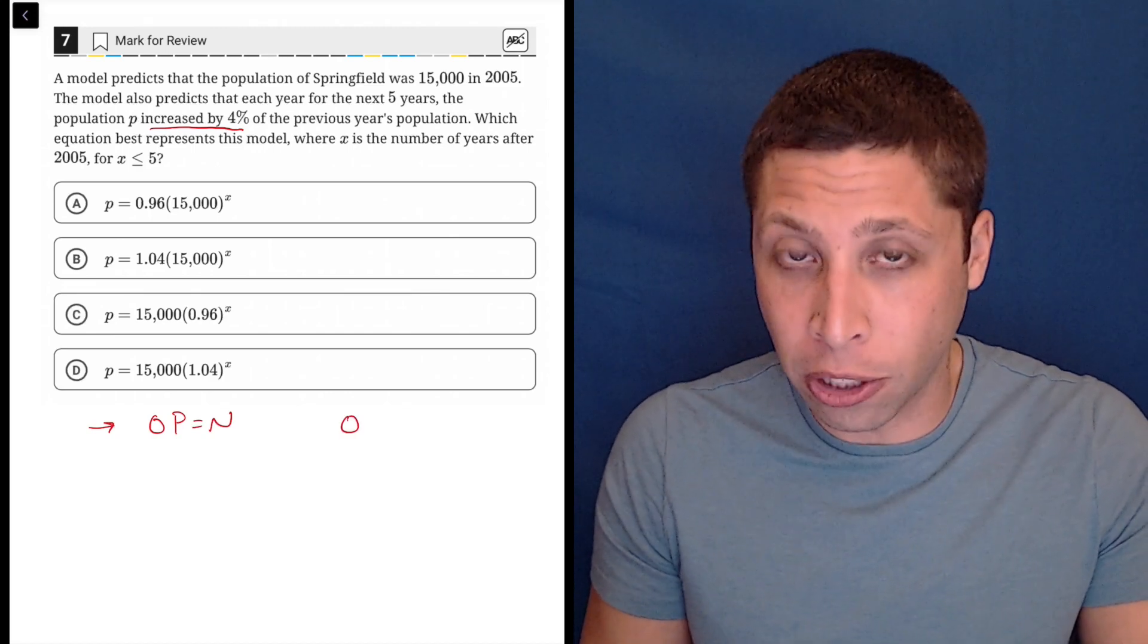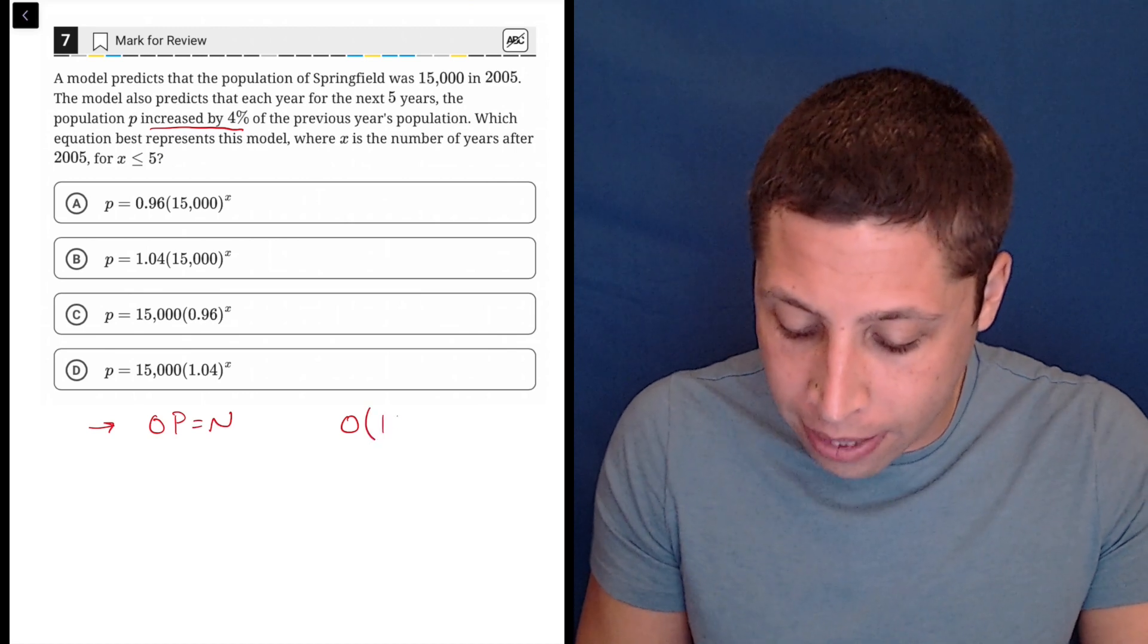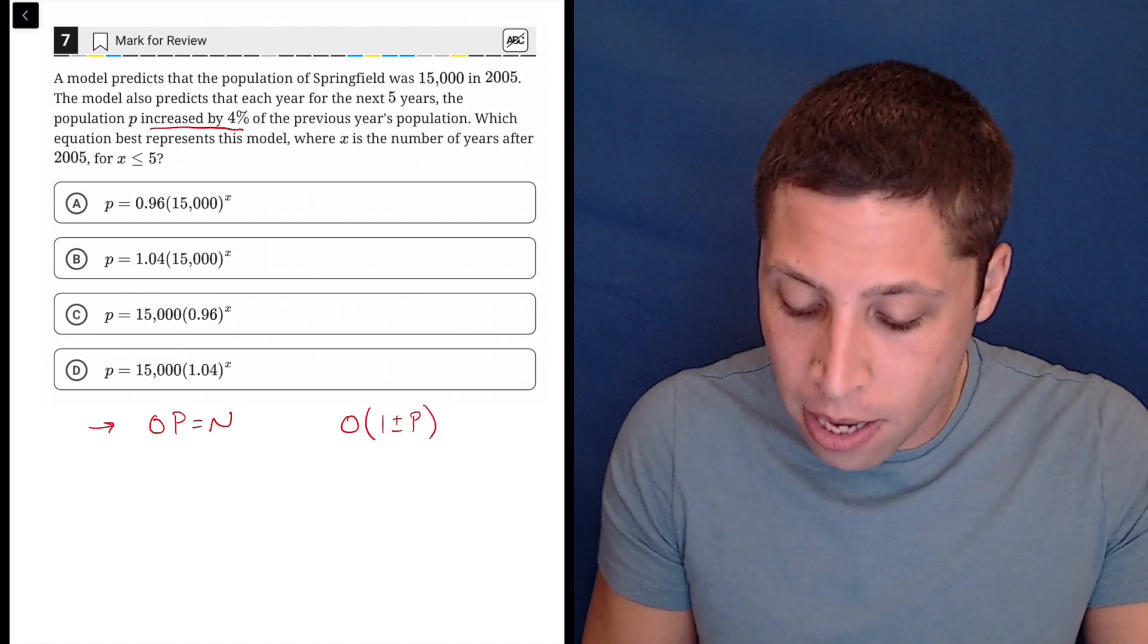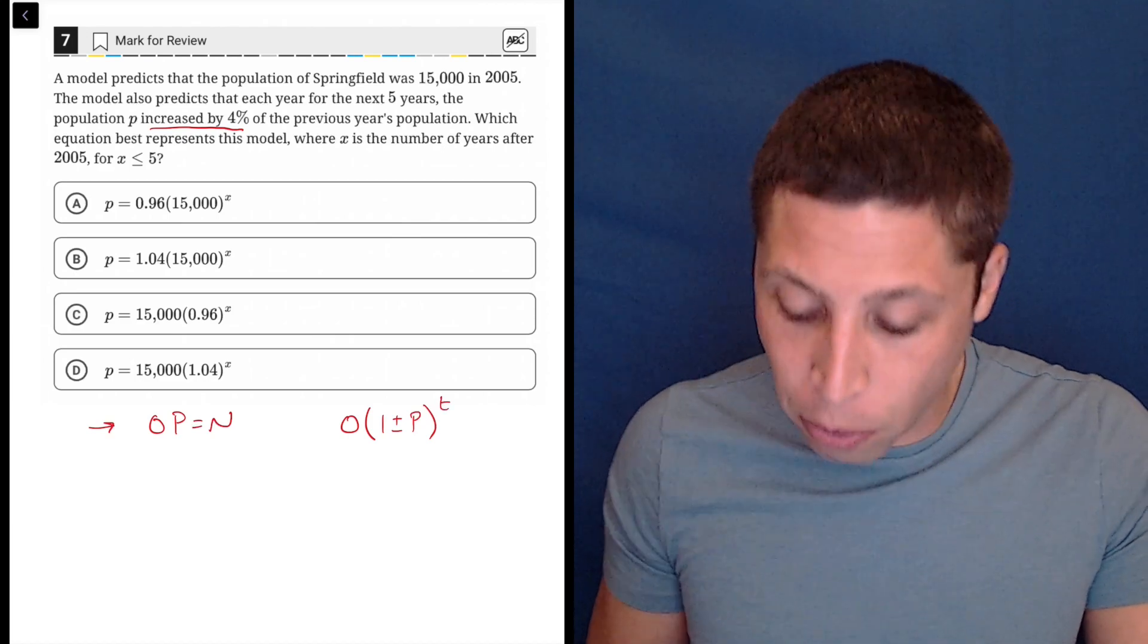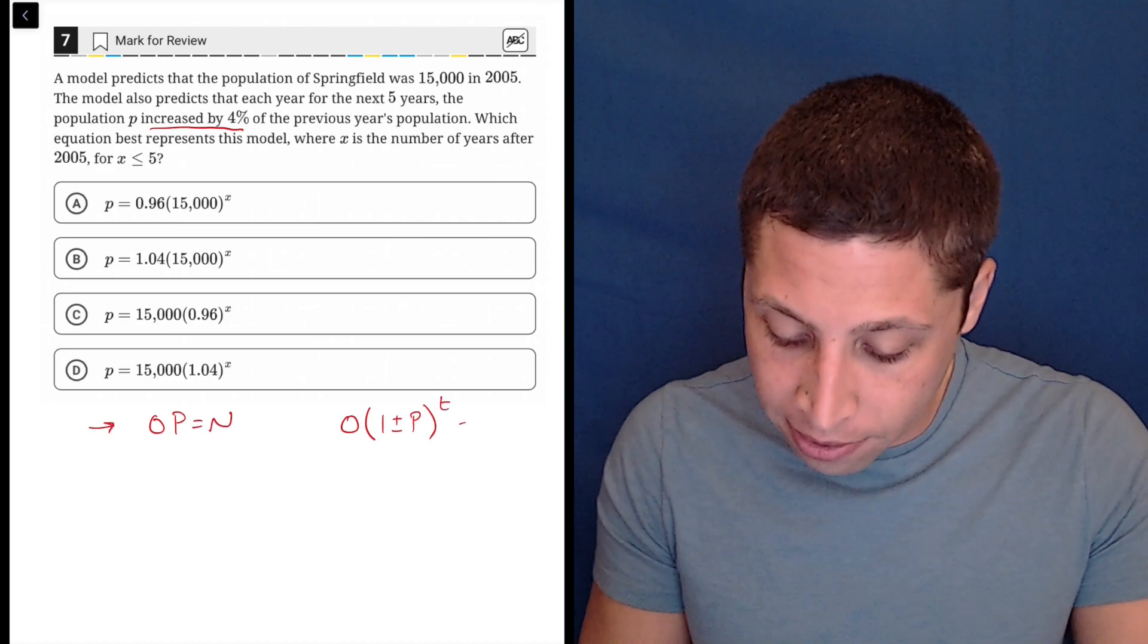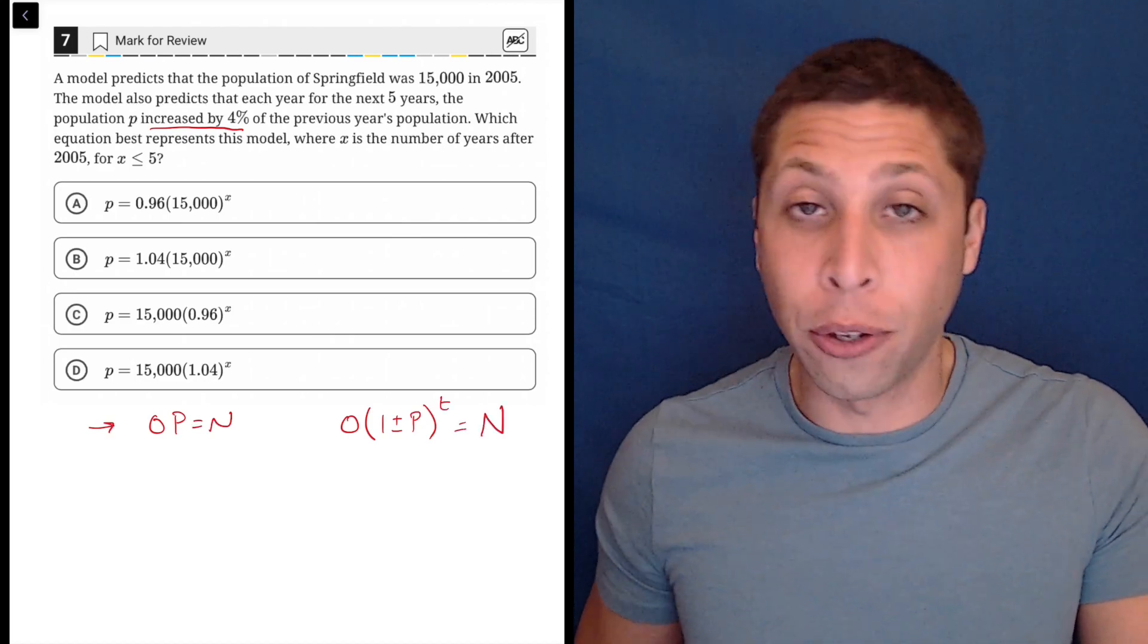We're going to still have the original. We're going to multiply it this time by 1 plus or minus p. That's raised to some sort of exponent, usually a t or an x. And that equals the new value for each year.